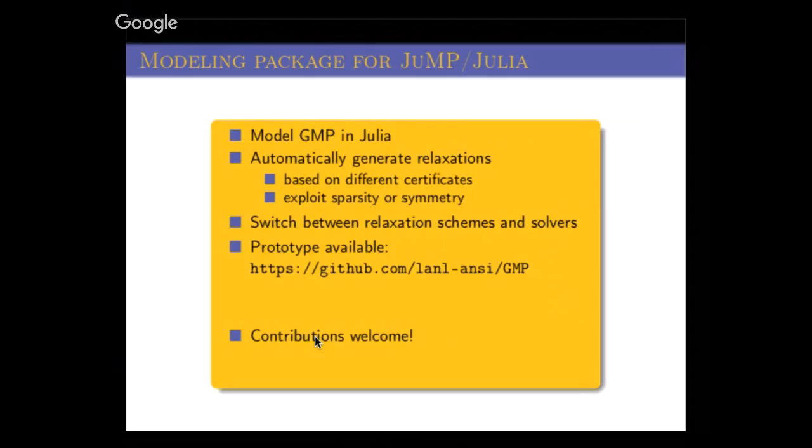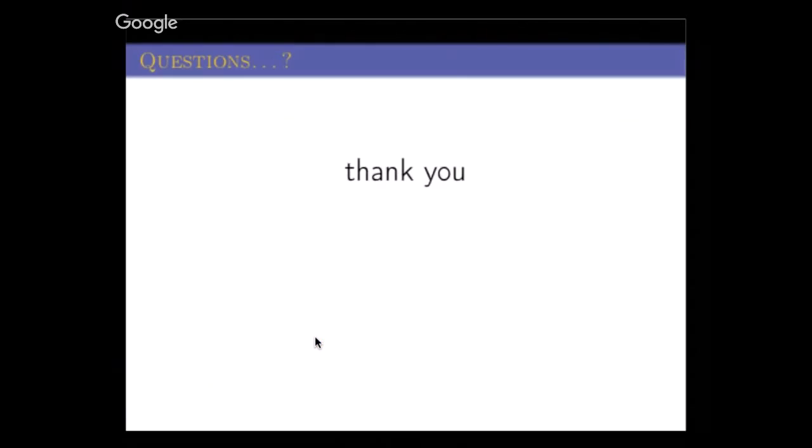Question: Using the moment sum of squares gives you a sort of relaxation. Is there any other cones that give you a sufficient condition, like give you a primal solution? Answer: The sum of squares gives you a feasible solution in the limit. There are other relaxations like LTEs. It just turns out that the SDP relaxation is kind of the best one so far.